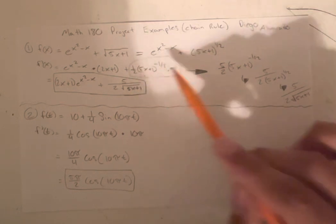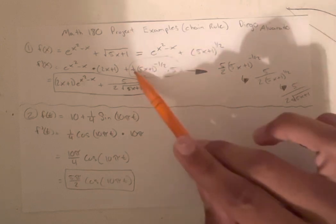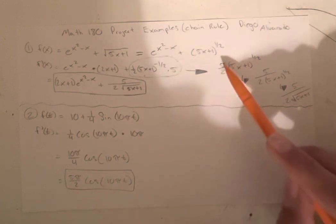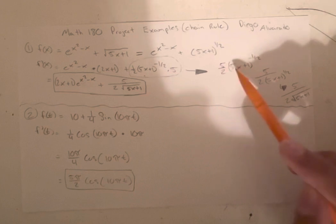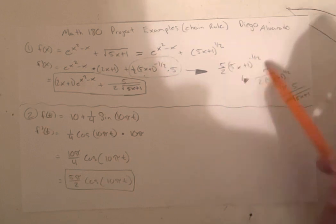So we can rewrite this. We can get this 5 and this one half and combine it. So it would be 5 halves times 5x plus 1 to the negative one half power.